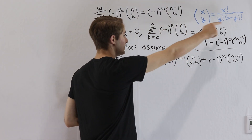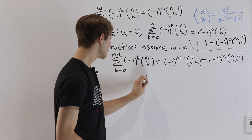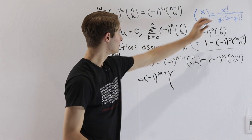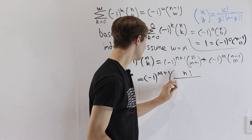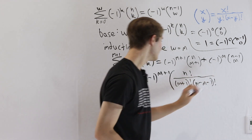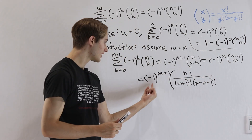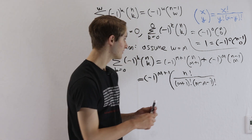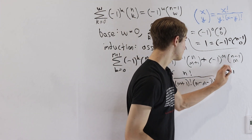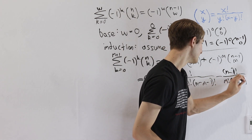Let's expand out all of these choose notations using our x choose y formula, and also factor out a negative 1 to the m plus 1. So n choose m plus 1 gives us n factorial over m plus 1 factorial times n minus m minus 1 factorial. For the second term, since we already factored out negative 1 to the m plus 1, the negative 1 to the m leaves us with a minus sign, and n minus 1 choose m becomes n minus 1 factorial over m factorial times n minus 1 minus m factorial.